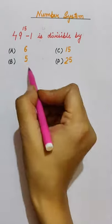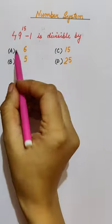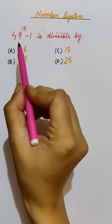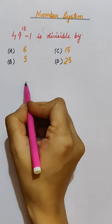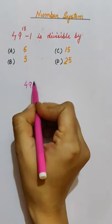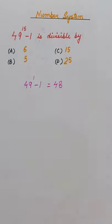So this number, which number is it divisible by? Let's do it by a short trick. See what power is here? Odd. So take the smallest odd number, that is 1.